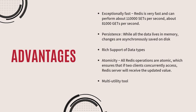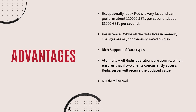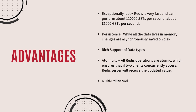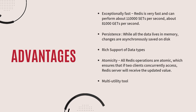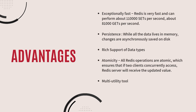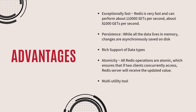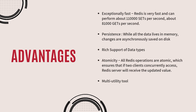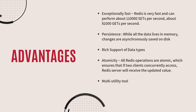Talking about persistence, Redis stores all the data in memory. Changes are asynchronously saved on disk using flexible policies based on elapsed time and number of updates since the last save. Redis also supports rich data types — it natively supports most data types that developers already know, such as lists, sets, sorted sets, and hashes.